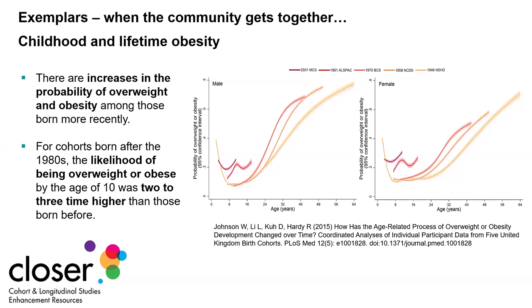There are many scientific collaborations using multiple longitudinal population studies for huge scientific gain. One strong example is from the CLOSER consortium and some of the harmonisation work they did on body weight and composition using multiple cohorts in the UK, showing stark increases in the percentages of populations who are overweight and obese in generations born more recently compared to older ones.